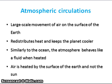Atmospheric circulations refer to a large-scale movement of air on the surface of the Earth and also the means by which thermal energy is distributed across the Earth's surface. Not only do atmospheric circulations redistribute heat, but it also helps keep the planet cooler.